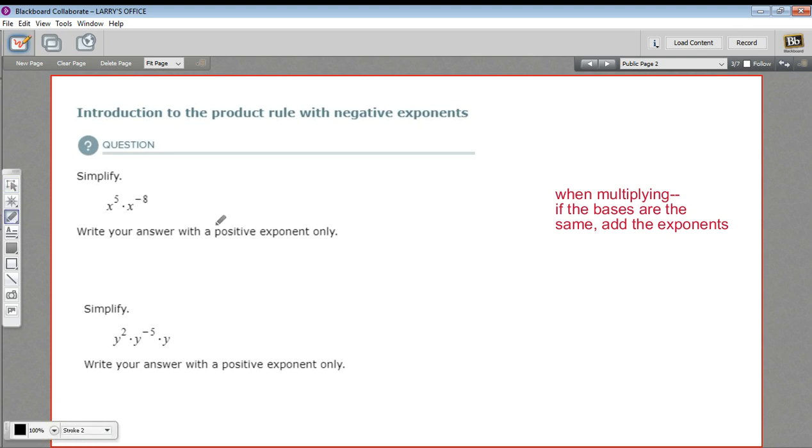In these problems, we are multiplying with exponents. And when you have the same bases, so for example, x to the fifth and x to the negative eighth, the bases are both x for those. When you have the same bases, you just add the exponents when you're doing multiplication.